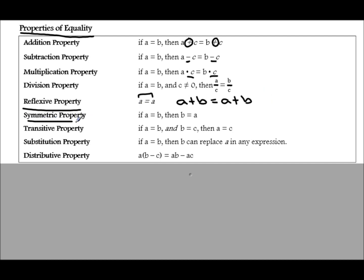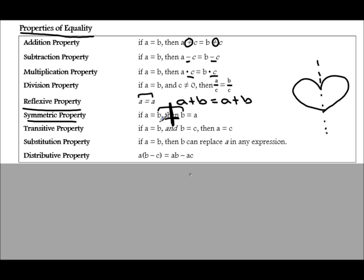The symmetric property — if you know what a line of symmetry is, think of a heart. If you draw a line of symmetry and fold along it, you'd have two equal halves that fold on top of each other. In the symmetric property, you're going to see the word 'then.' If you were to fold along that word, the b would fall on top of the b and the a would fall on top of the a. So it's symmetric on both sides, separated by the word 'then.'